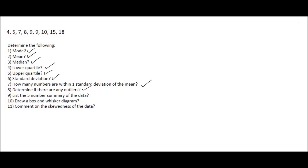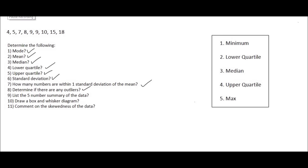Number nine asks for the five-number summary. The five-number summary consists of: the minimum value, the lower quartile, the median, the upper quartile, and the maximum. For our data that gives us: minimum = 4, lower quartile = 6, median = 9, upper quartile = 12.5, and maximum = 18.